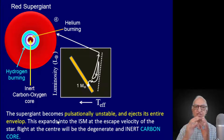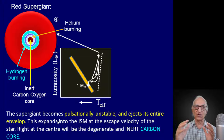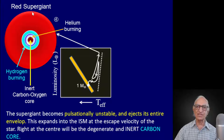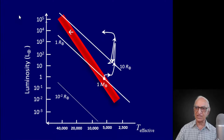Then the red supergiant star becomes pulsationally unstable. It begins to oscillate, the amplitude of the oscillation increases, and the outer layers — the entire envelope — are ejected like the snake sheds its skin. This ejected shell expands into the interstellar medium with a velocity just larger than the escape velocity from the red supergiant star. I invite you to calculate the escape velocity from a star with the mass of the Sun and a radius of 300 solar radii, or 300 million kilometers. With that velocity, the ejected shell expands into the interstellar medium, and that is known as the planetary nebula.